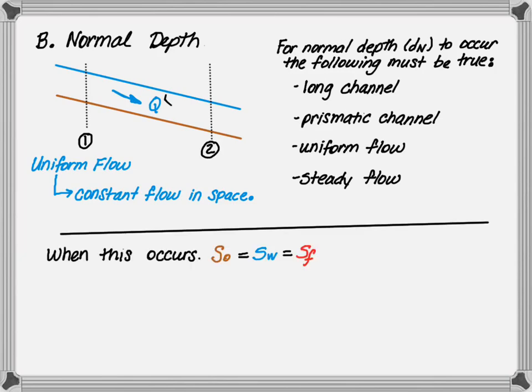When all this is true, the bed slope is equal to the water surface slope, which is equal to the friction slope. And the Manning's equation can be rewritten by changing the friction slope, which is impossible to measure, with the bed slope as shown.